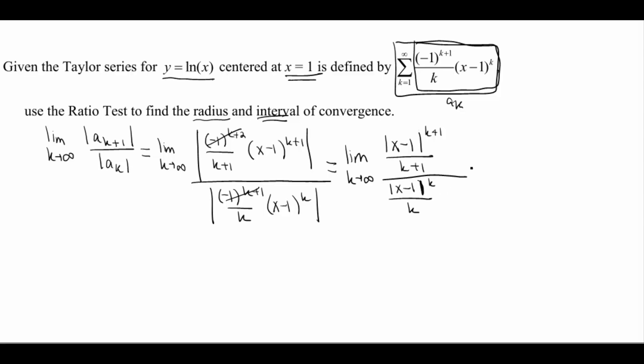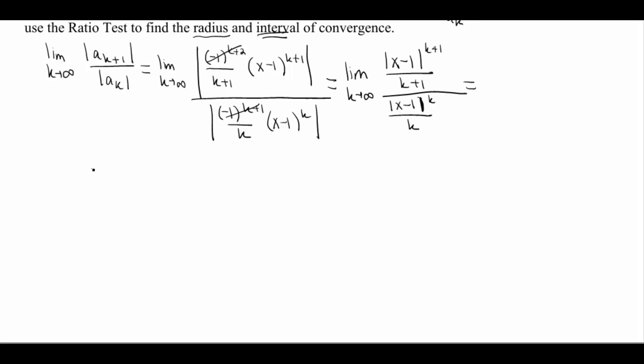Okay, we're getting there. So now I see a fraction over a fraction, so let's go ahead and multiply by the reciprocal. Let me go down to the next line here. So I've got the absolute value of x minus 1 to the k plus 1, all over k plus 1, times I'm gonna flip that denominator over. So I've got k over x minus 1 to the k. Hopefully you guys are buying this algebra so far. So now I'm gonna break these two things apart. Let's get the k's together and all the x minus 1 and absolute values together. So we have the limit, k approaches infinity, k over k plus 1. Absolute value x minus 1 to the k plus 1, all over absolute value of x minus 1 to the k.